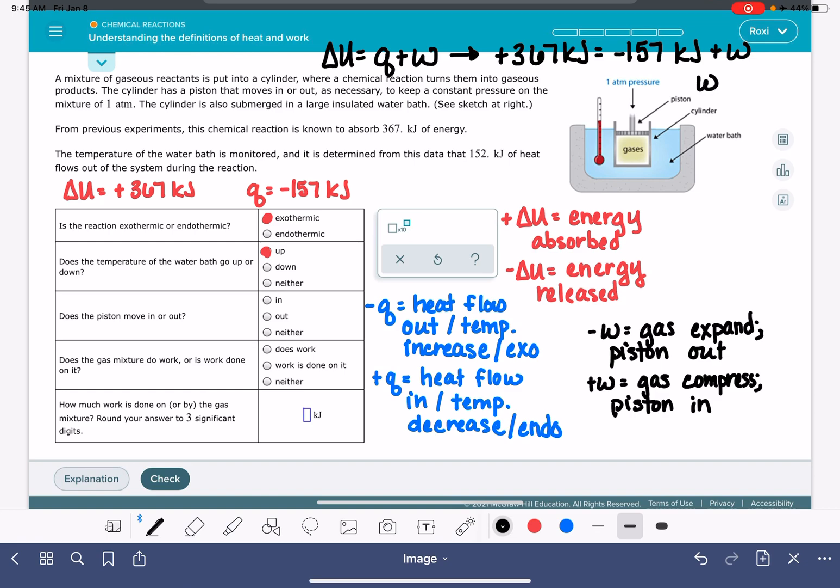Our work is going to be a positive 519 kilojoules. Since our work is positive, this means that the gas is being compressed and the piston is moving in. And again, that comes completely from the sign of W.